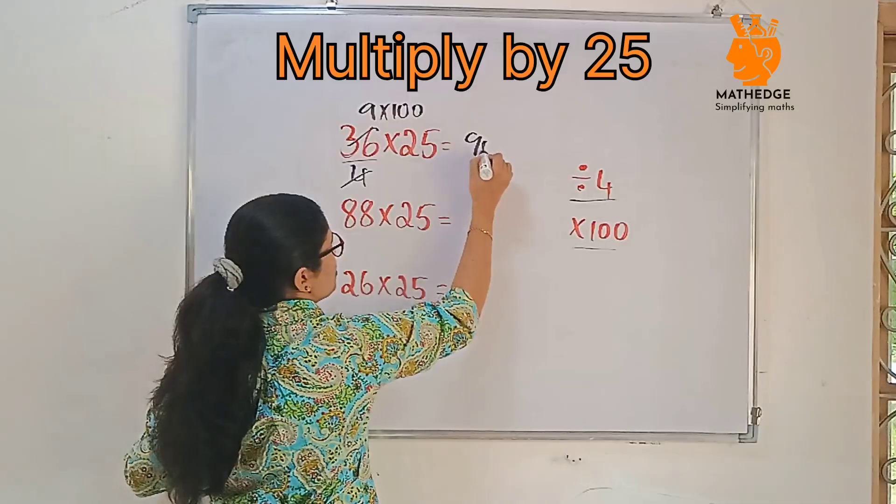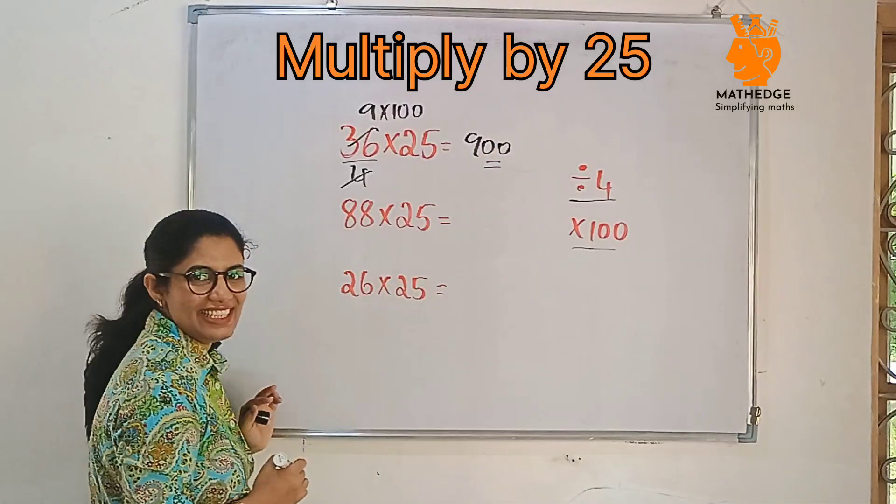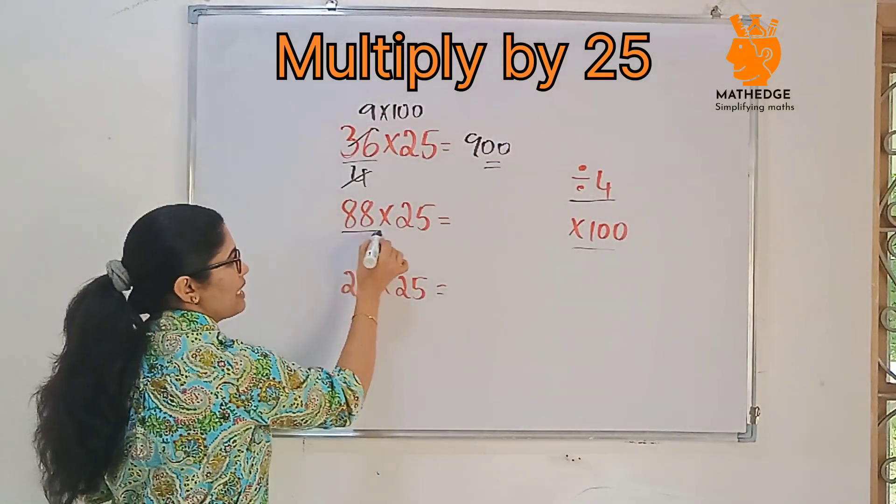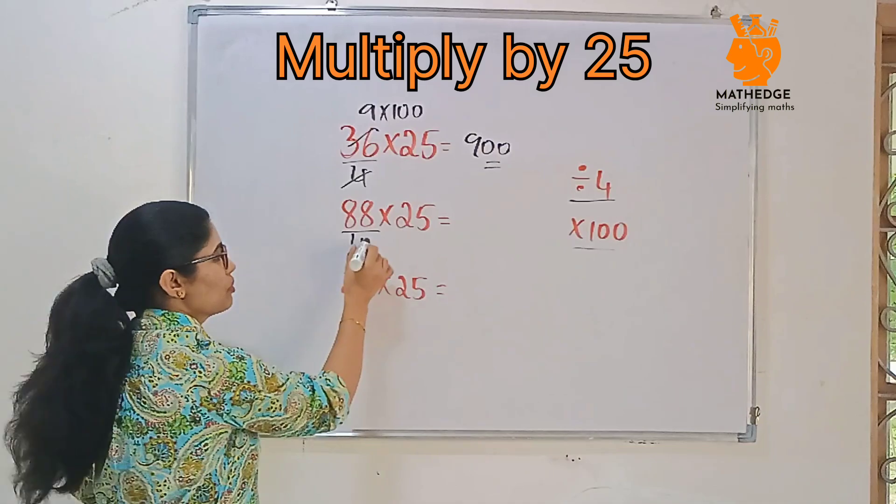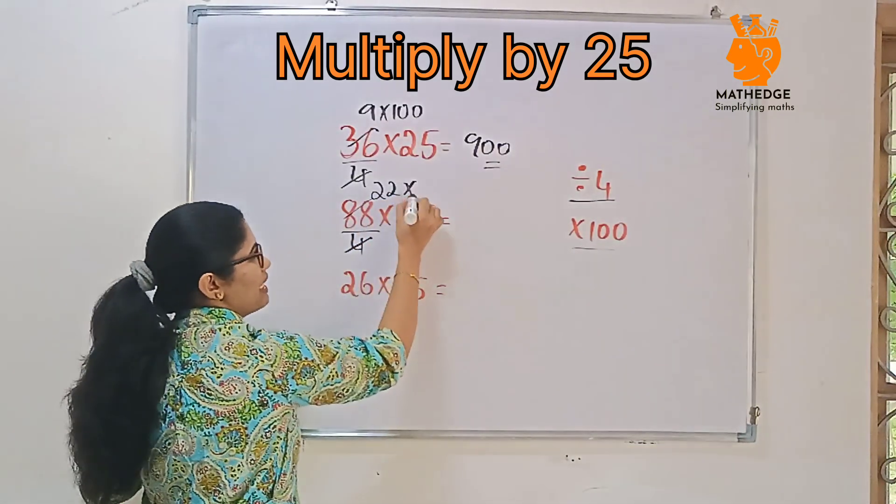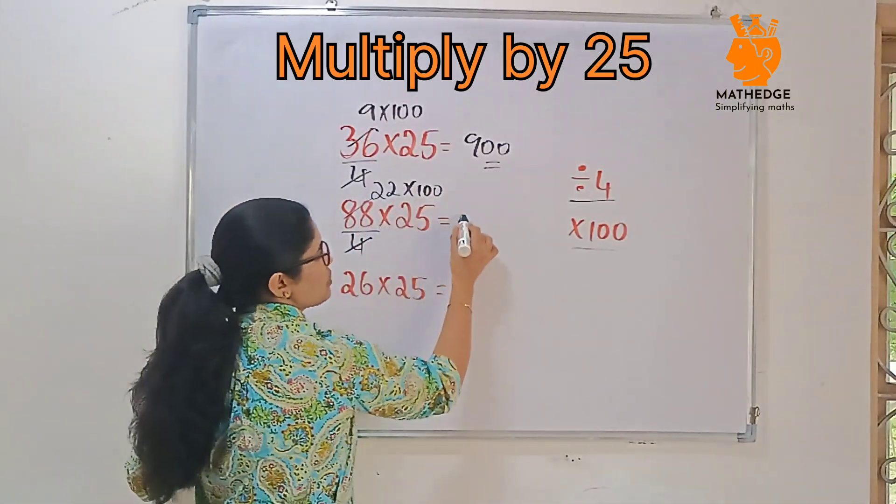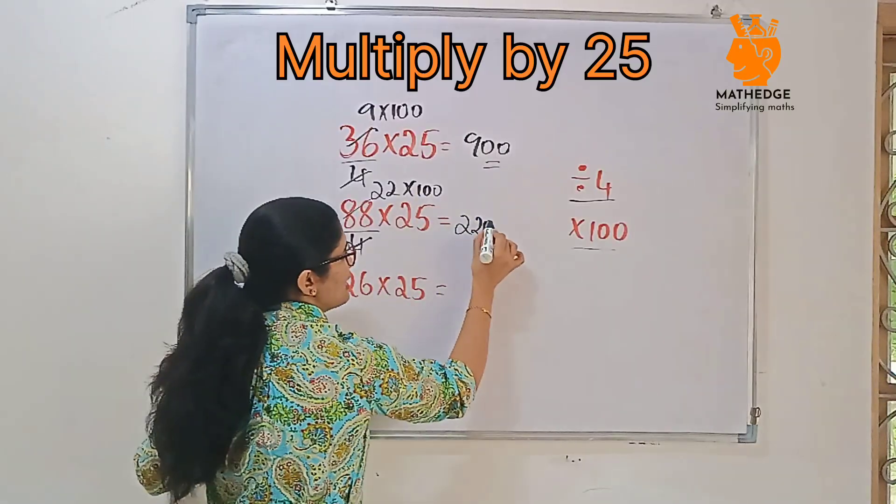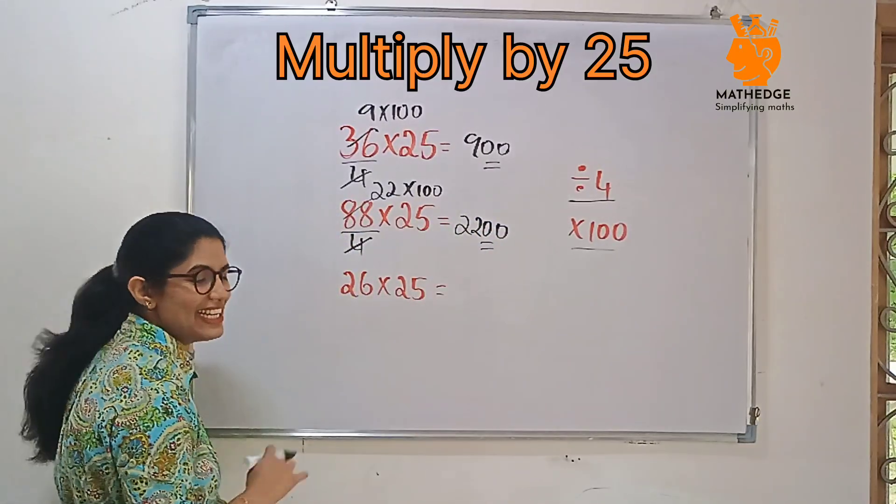So 9 into 100 is 900. Then 88 multiply by 25, divide by 4. So 4 twenty-twos, then multiply by 100. 22 into 100, 2200, write 2 zeros. Easy right? Done.